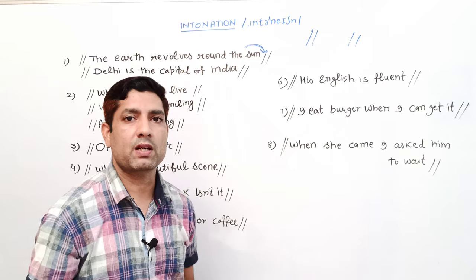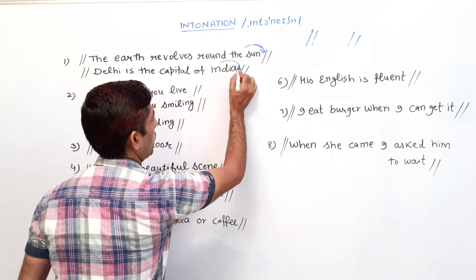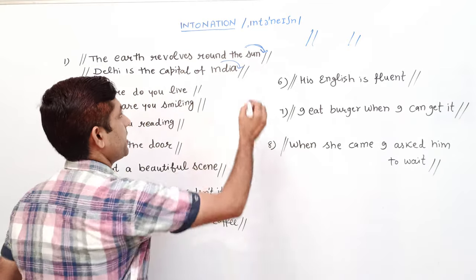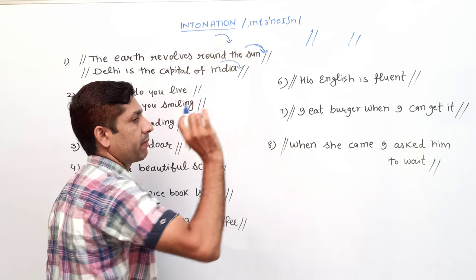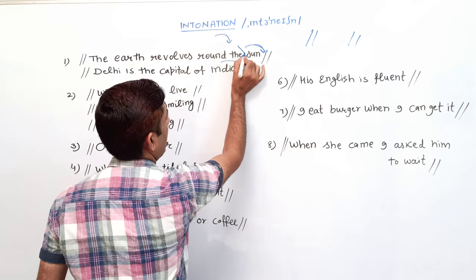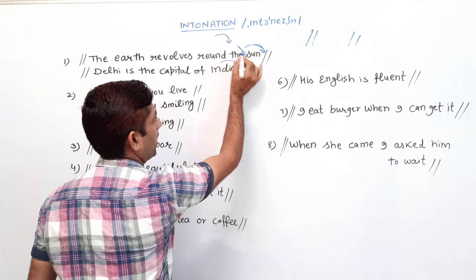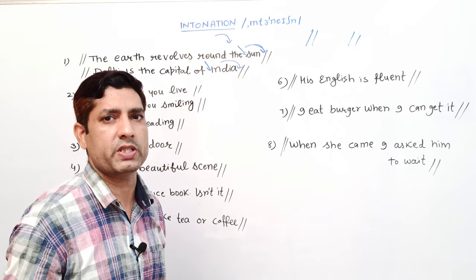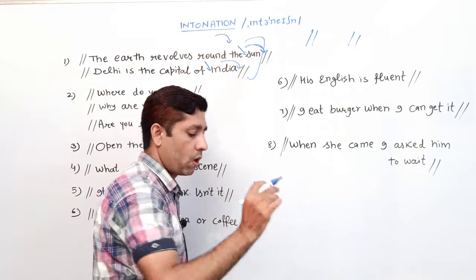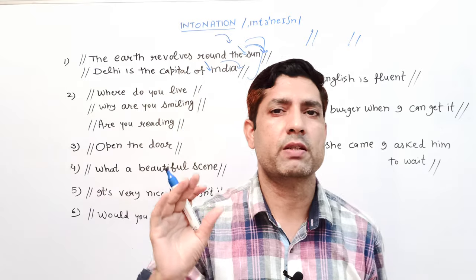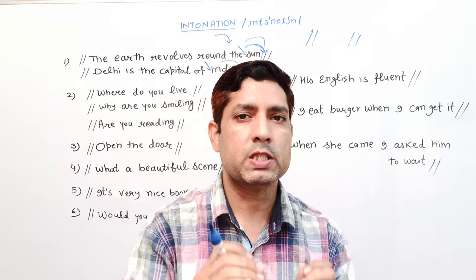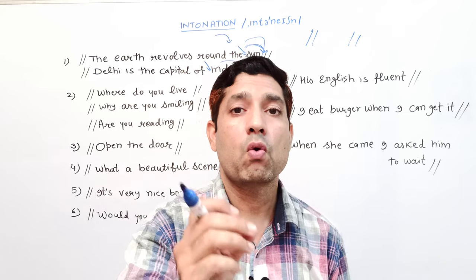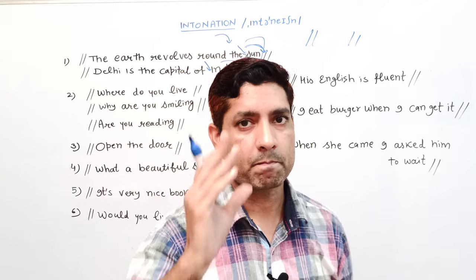'Delhi is the capital of India' — falling intonation. इसको mark करने के अलग-अलग तरीके हैं; आप ऊपर से नीचे arrow का mark भी दे सकते हैं। पहला rule यह है कि general statement में, जब speaker कुछ और कहना न चाहे और किसी answer की expect न करे, वहाँ पर falling tone होती है।